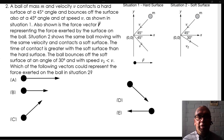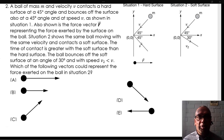A ball of mass m and velocity v contacts a hard surface at a 45-degree angle and bounces off the surface also at a 45-degree angle and at speed v, as shown in situation 1. Also shown is the force vector f representing the force exerted by the surface on the ball.